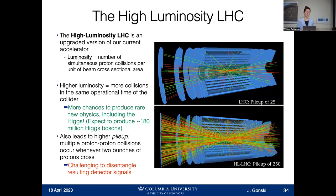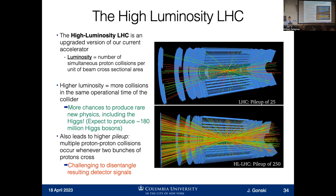With that, I want to get into the high luminosity LHC — the primary upgrade of the Large Hadron Collider. The term luminosity in collider physics has a specific definition: it is the number of simultaneous proton collisions per each unit of the cross-sectional area of these beams as they're passing — number of collisions per unit time per unit area in the collider. Higher luminosity means we have more collisions during a single period of operational time, giving us more chances to produce really rare new physics — more chances to produce a dark matter interaction, for example, and more Higgs bosons. In the high luminosity LHC, we're expecting to produce about 180 million of these particles.